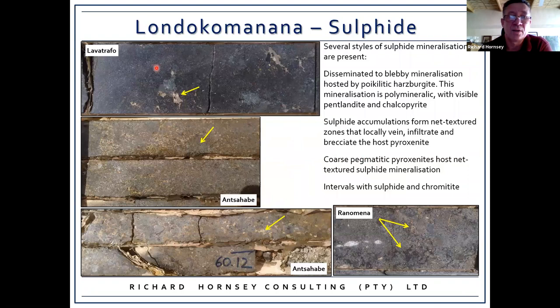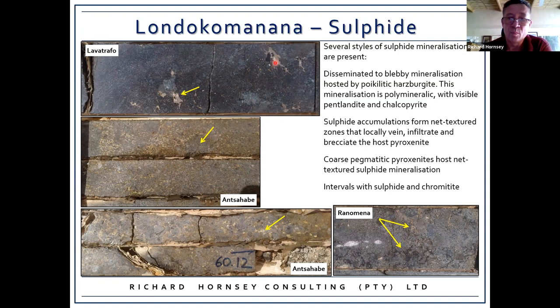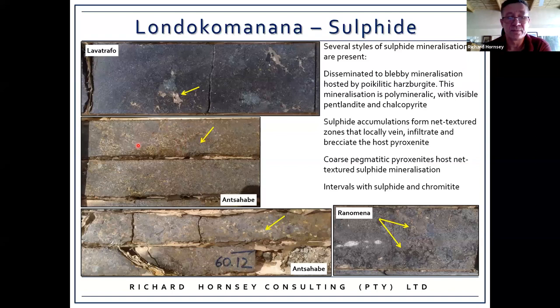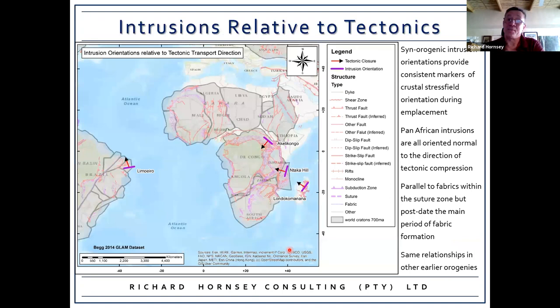Sulfide mineralization is variable and fairly ubiquitous. Within the poikilitic harzburgite there's blebby and disseminated mineralization — chalcopyrite and polymineralic blebs of pentlandite and pyrrhotite — within the pyroxenite as well. Sulfide accumulations and net-textured zones form locally infiltrating and brecciating zones with blocks of pyroxenite surrounded by sulfide matrix. Coarse pegmatitic pyroxenites contain chalcopyrite, and intervals with both sulfide and chromitite mineralization are also present.